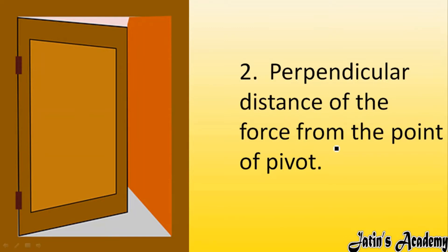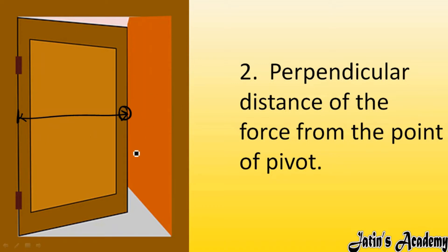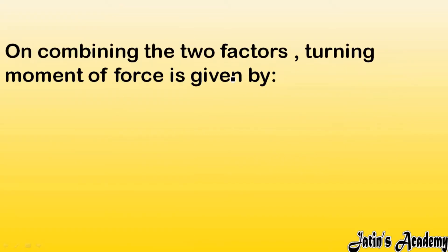The second factor is the perpendicular distance of the force from the pivot point. If there is a maximum possible perpendicular distance between the pivot point and the point where force is applied — for example, the handle of a door placed far from the hinge — then greater turning effect will occur. By applying even less force, a greater turning effect is produced when the perpendicular distance is larger.